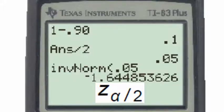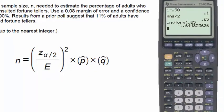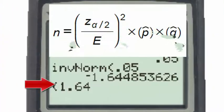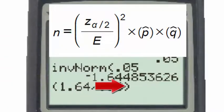So using 1.64 as our z subscript alpha divided by 2, and inputting the different values into our formula, we'll start with a parenthesis, then 1.64, then divided by the margin of error which is 0.08 or 8 percent, close the parenthesis.